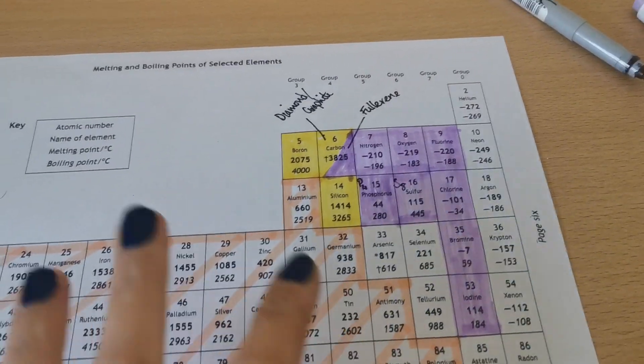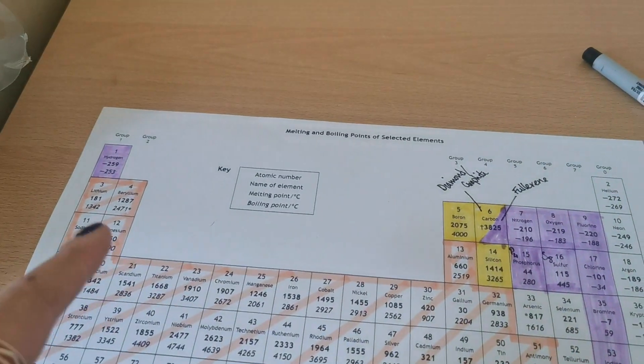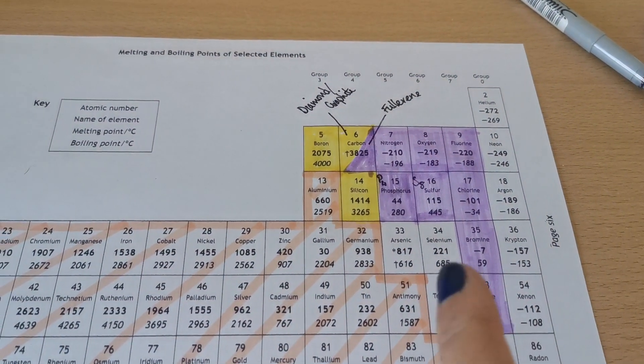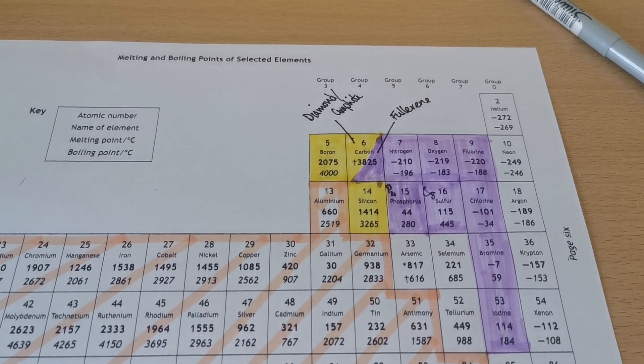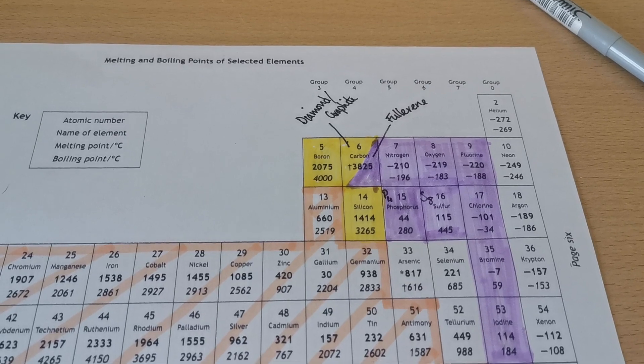That's for the covalent molecules. So you've got all the diatomics, including hydrogen. Phosphorus is P4. Sulfur is S8. And then the carbon in the form of fullerene.